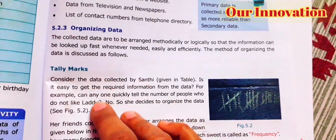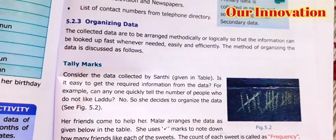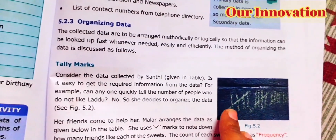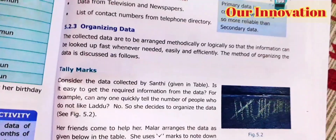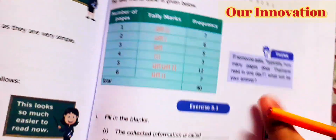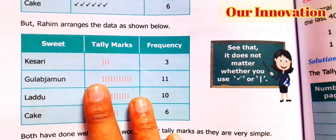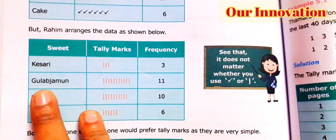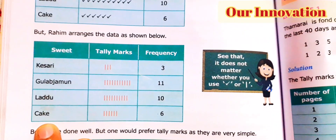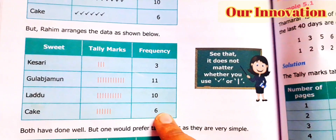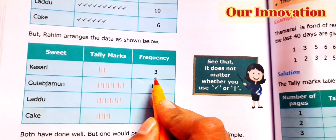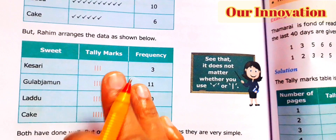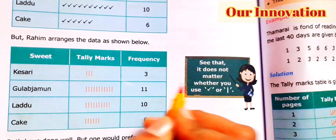Next is organizing data. After collecting data, we use tally marks to organize it. You can collect data from students and use tally marks to represent and organize it.